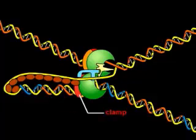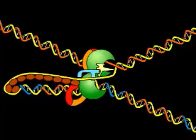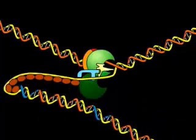The clamp that keeps the lower DNA polymerase attached to the lagging strand dissociates, and the DNA polymerase temporarily releases the lagging strand template DNA.